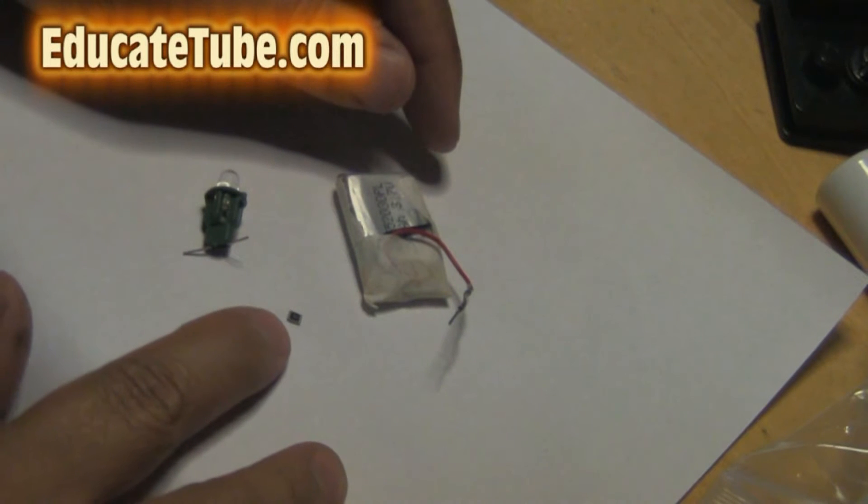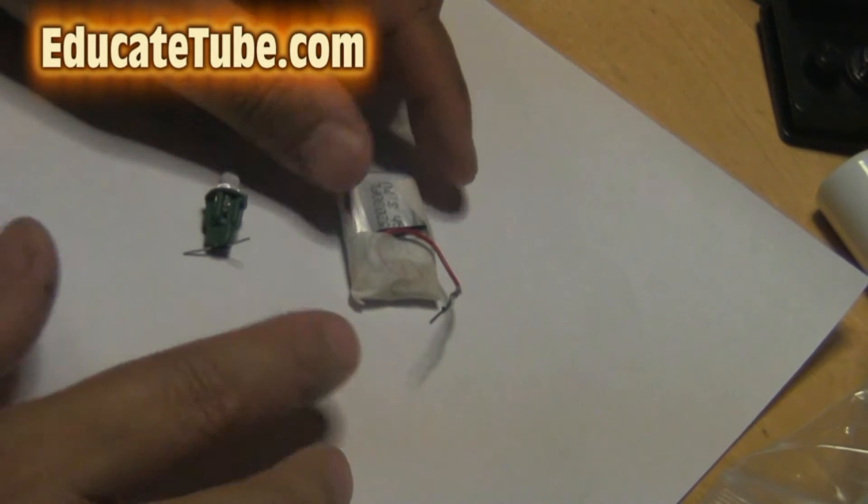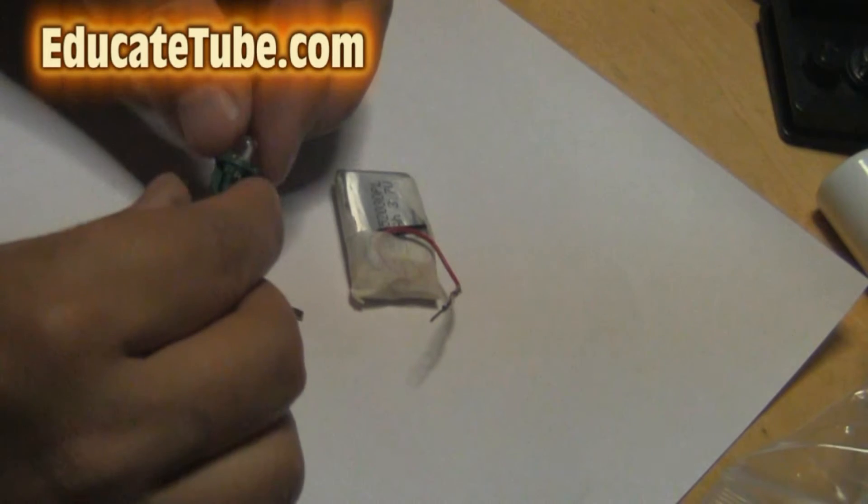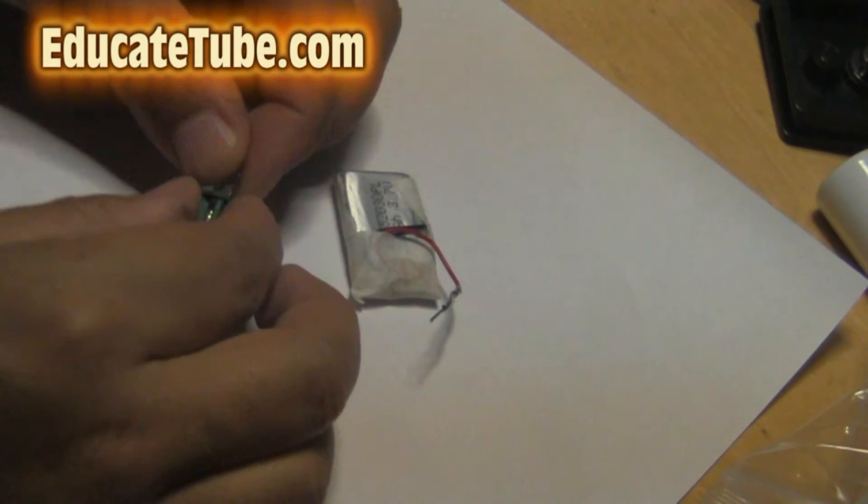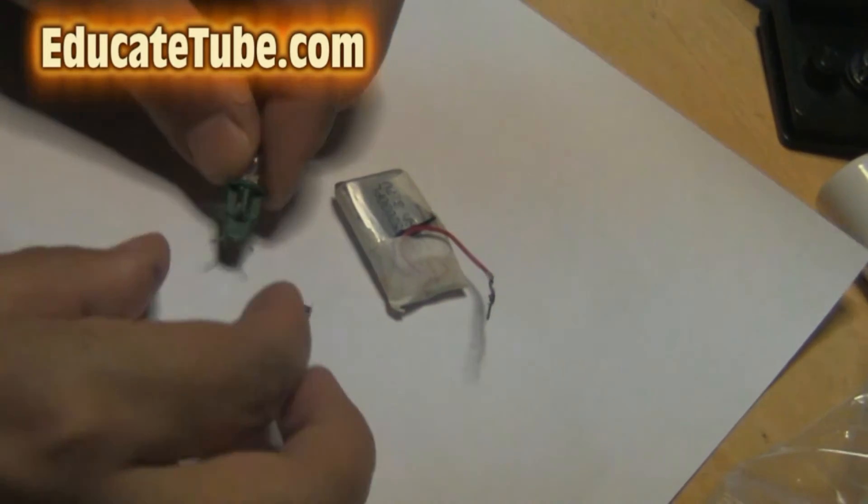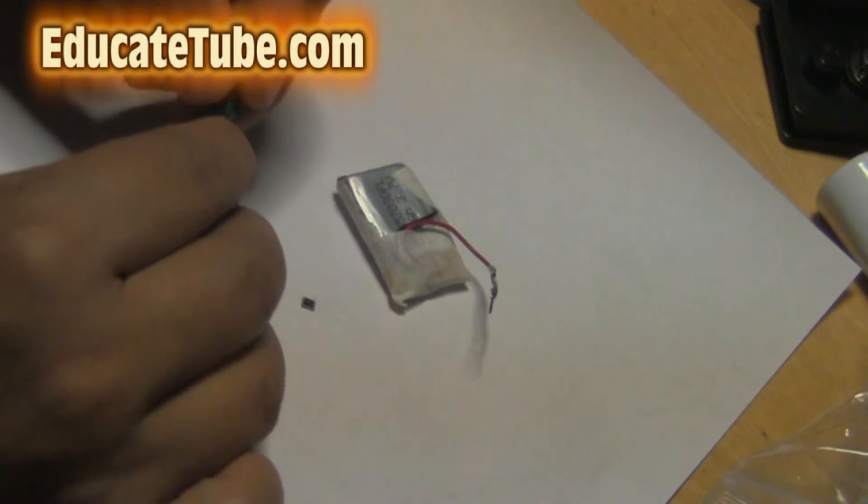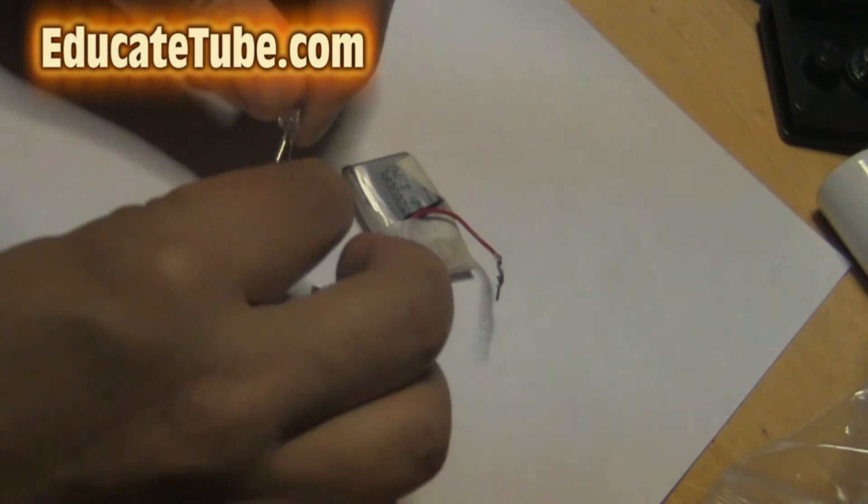150 ohm resistor. This is SMD surface mount resistor. And then of course you need the LED lights. This is from Christmas lights. Now if you buy the lithium battery, I will include all these three together for $5 plus shipping and handling for another $1 or $2 depending on where you live.